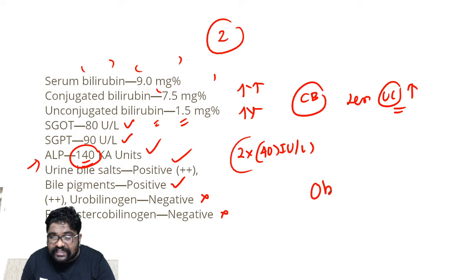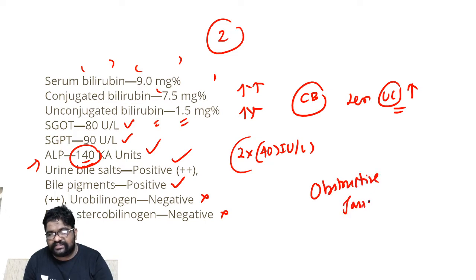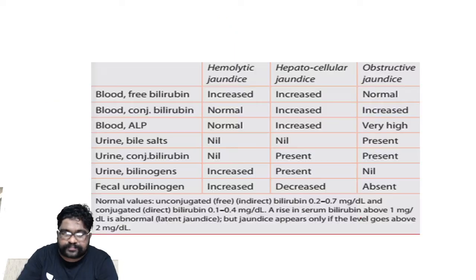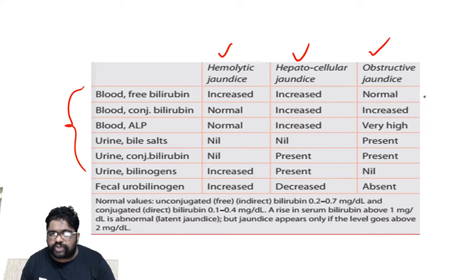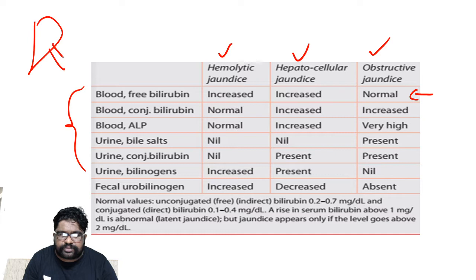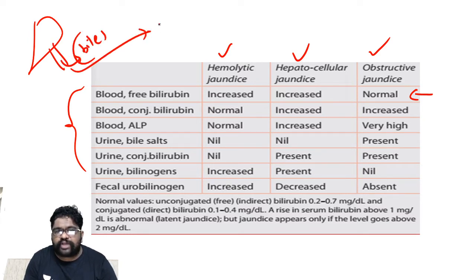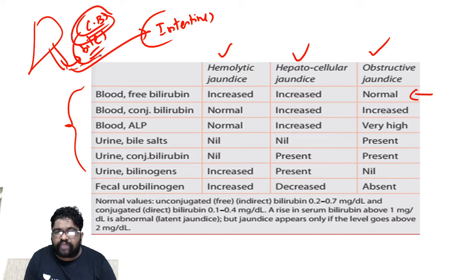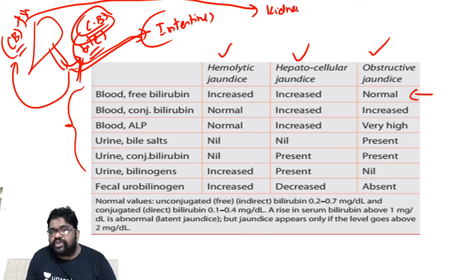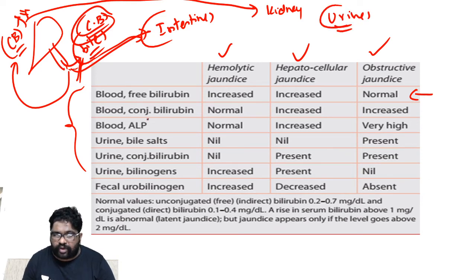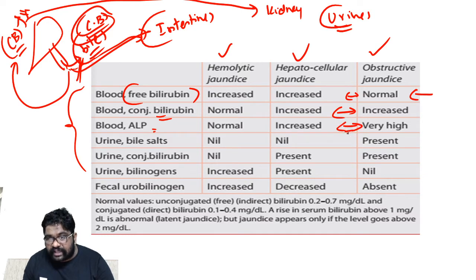This is a classical case of obstructive jaundice. In obstructive jaundice, there is an obstruction to the flow of bile, because of which bile cannot enter the intestine. The bile contains conjugated bilirubin — that conjugated bilirubin is capable of entering the intestine but is not allowed to. So conjugated bilirubin jumps into the blood and starts increasing. Blood-free bilirubin is actually normal, but conjugated bilirubin is increased, and blood ALP is very high because of the obstruction.